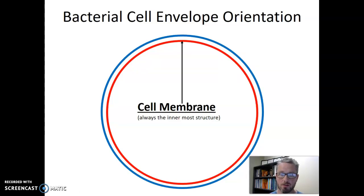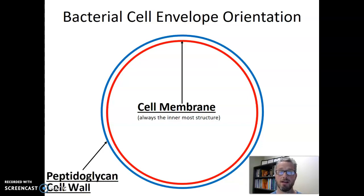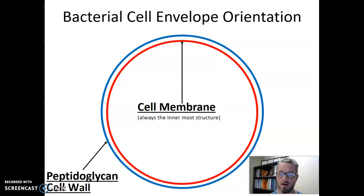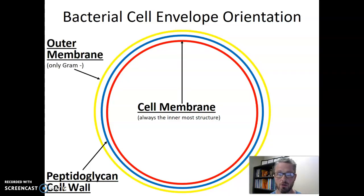Moving outwards from the cell membrane is the cell wall — the blue peptidoglycan cell wall lies outside of the cell membrane. They're always in that order; it never changes. We go: cytoplasm in the middle, then the cell membrane as we move outwards, and then the peptidoglycan cell wall. Every bacterial cell envelope has both the membrane and the cell wall, and then some have a last layer — shown in yellow — which is the outer membrane.